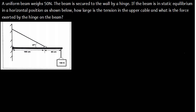In this tutorial, we are going to talk about static equilibrium. Here is a question: a uniform beam weighs 50 N. The beam is secured to the wall by a hinge. If the beam is in static equilibrium in a horizontal position, as shown below, how large is the tension in the upper cable, and what is the force exerted by the hinge on the beam?